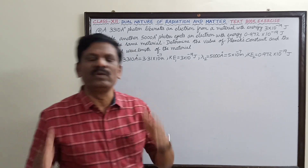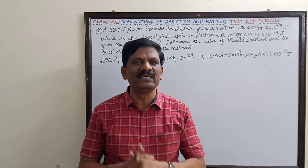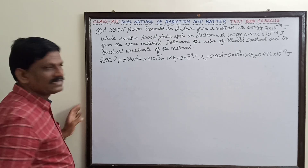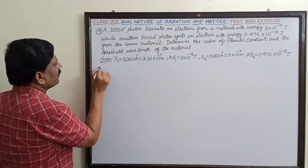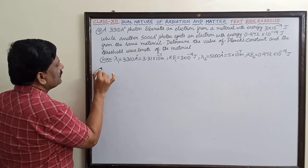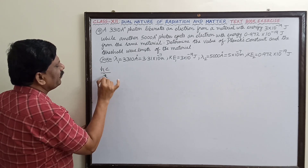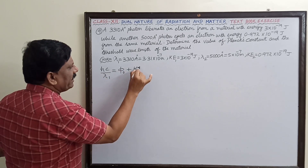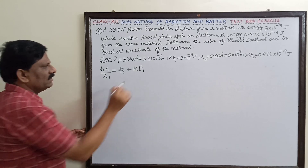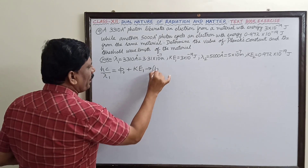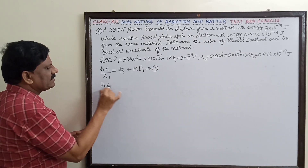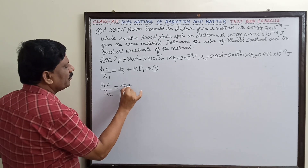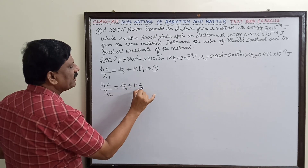In such problems, we begin with Einstein's photoelectric equation. For the first case: hc/λ₁ = φ₀ + KE₁ — this is equation 1. For the second case: hc/λ₂ = φ₀ + KE₂ — this is equation 2.